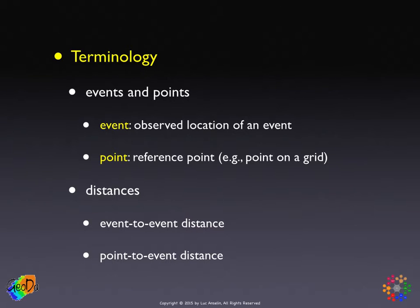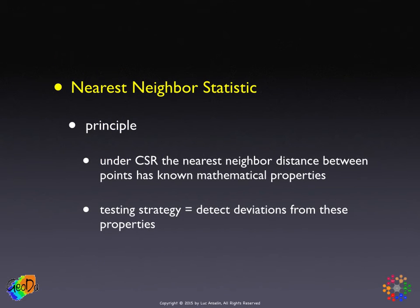The idea is that we are going to construct a statistic based on the distribution or characteristics of these nearest neighbor distances. Under complete spatial randomness — when we have a homogeneous Poisson point process — we can actually derive exactly the characteristics of the nearest neighbor distance. It follows a very specific mathematical formula. Our testing strategy will consist of finding ways to detect deviations from this strict mathematical formula for CSR.